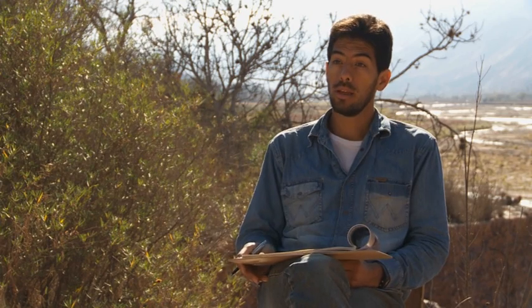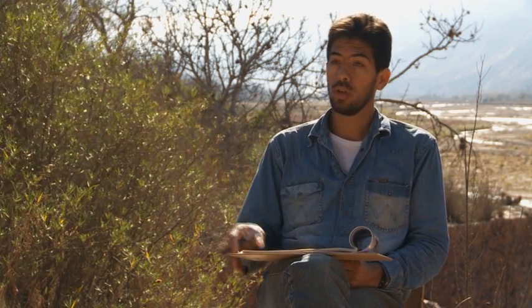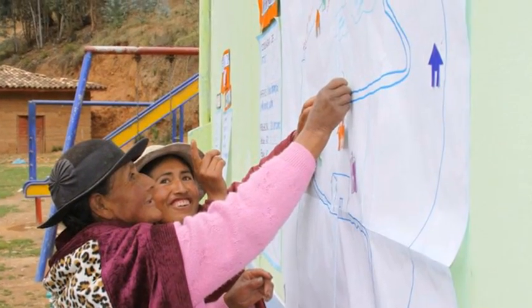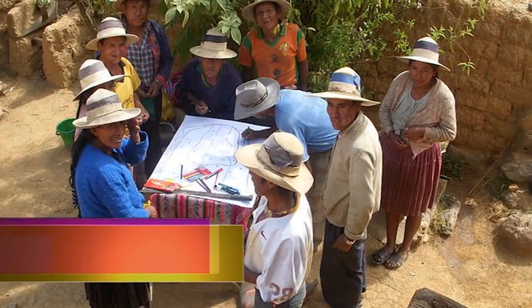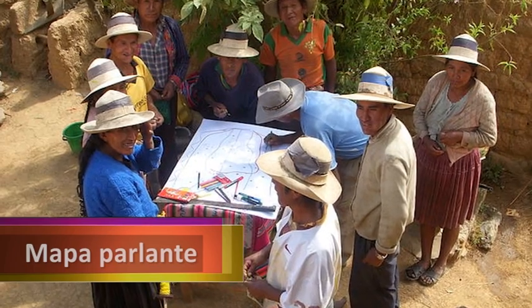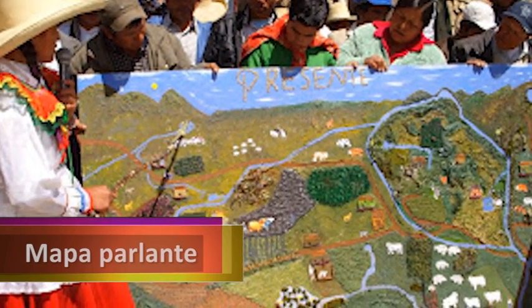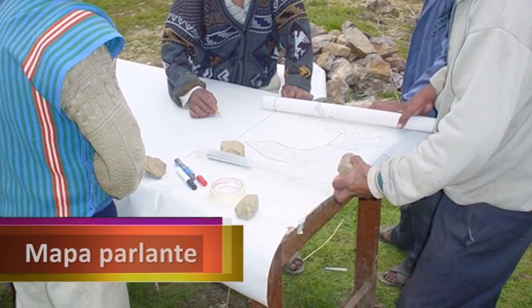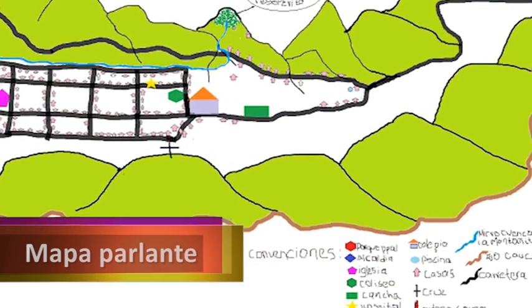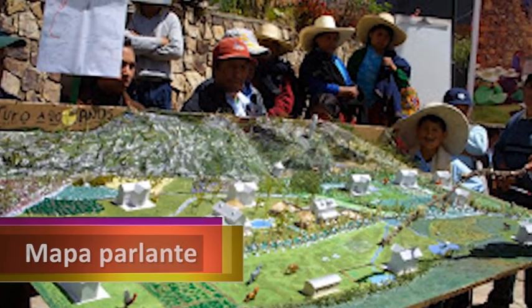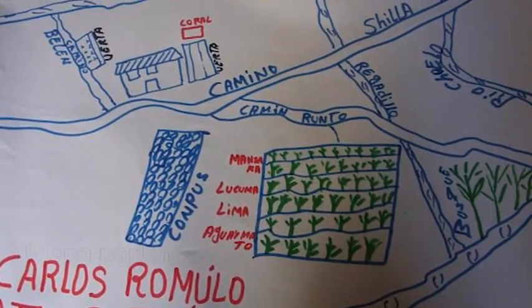Esa información tiene que verse plasmada en informes de la comunidad o inclusive en otros instrumentos que se usan mucho en los diagnósticos hídricos participativos, como son los mapas parlantes o los mapas del territorio. Es decir, en un papel o en un afiche la comunidad representa su territorio con las diversas fuentes de agua, la ubicación de los núcleos de población, la ubicación de las parcelas agrícolas, de los bebederos, de los corrales.